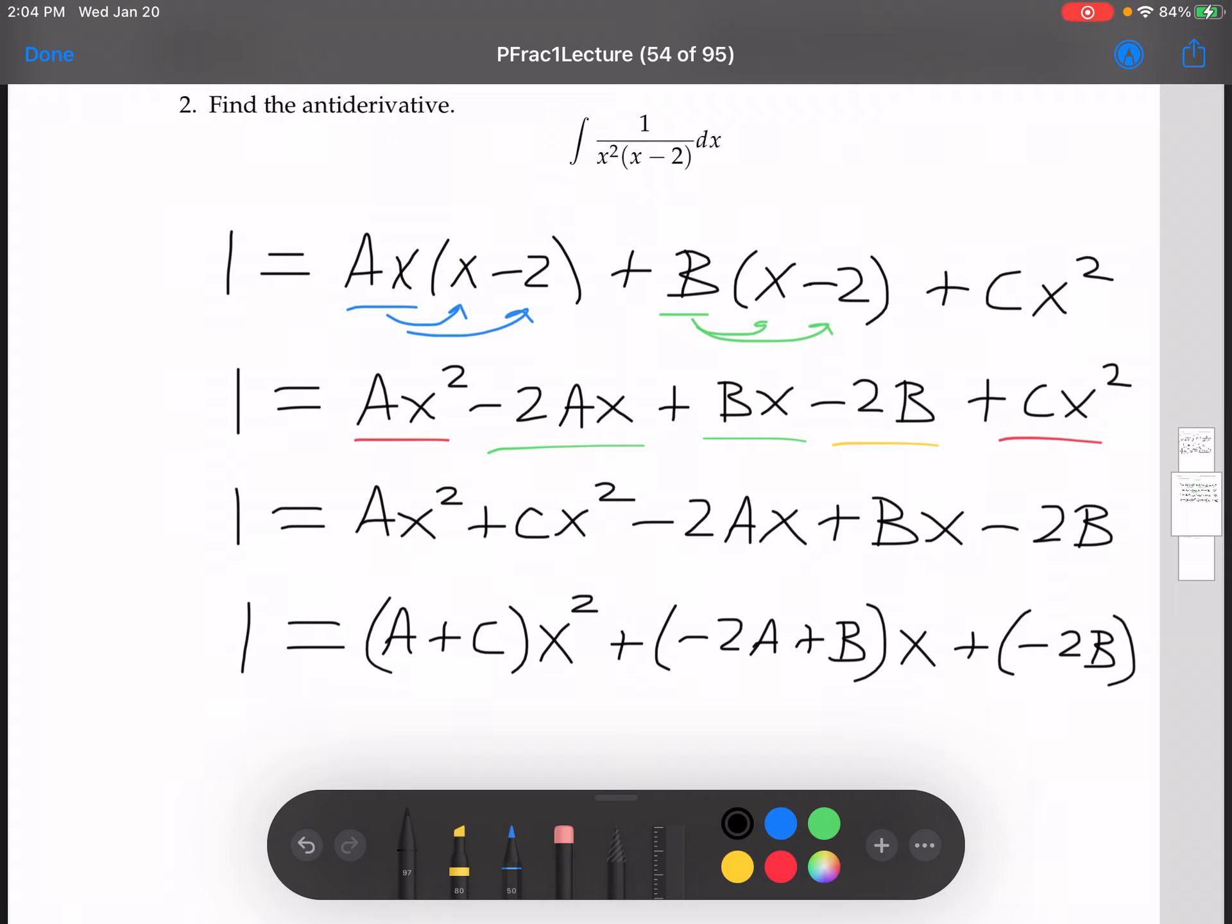Like so. And just now ask yourself, can I move back, can I work backwards? If you were to distribute this x through to both of those, right, you'd see you get a Cx squared and an Ax squared, and same thing with this term and this term.